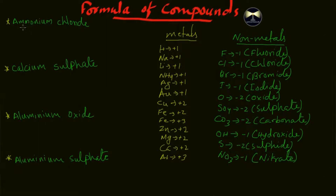The first compound is ammonium chloride. The symbol for ammonium is NH4, so first you write NH4. The symbol for chloride is Cl — I'll write that in blue. Now write the oxidation state of ammonium below it: ammonium is plus one. Write the oxidation state of chlorine below it as well. Remember: while forming the formula you do not write the plus and minus signs.